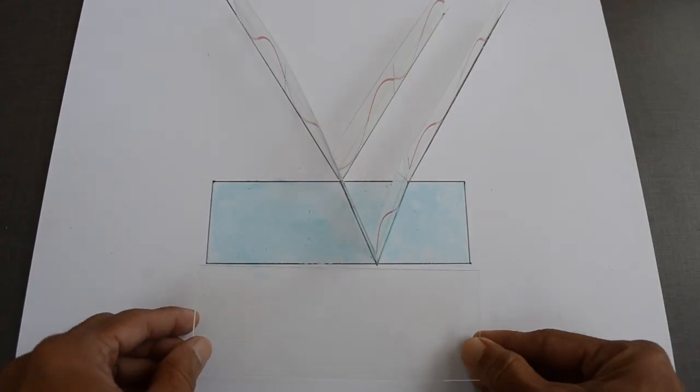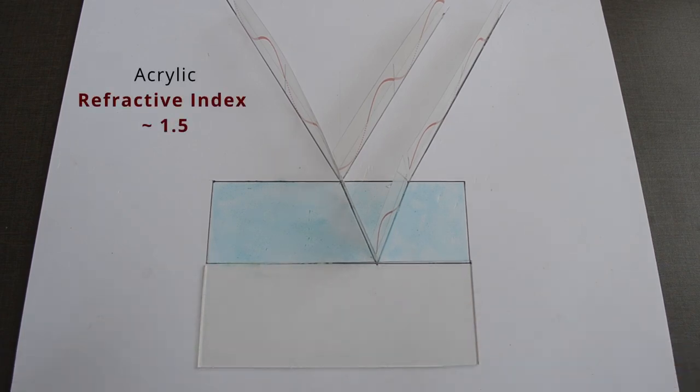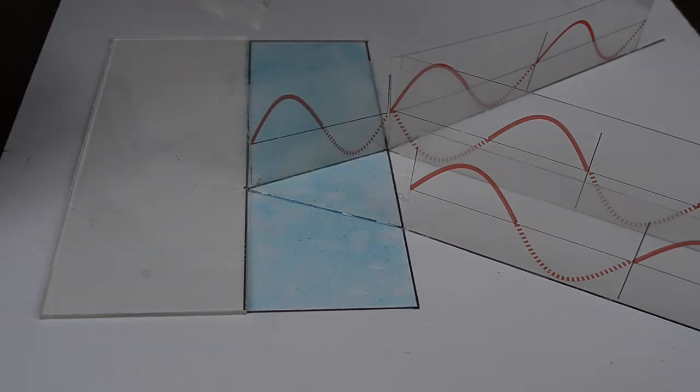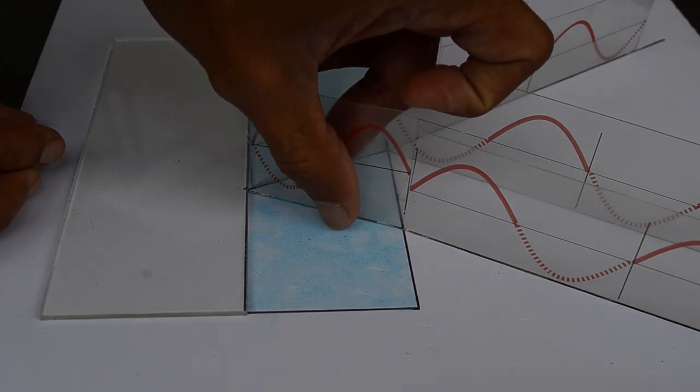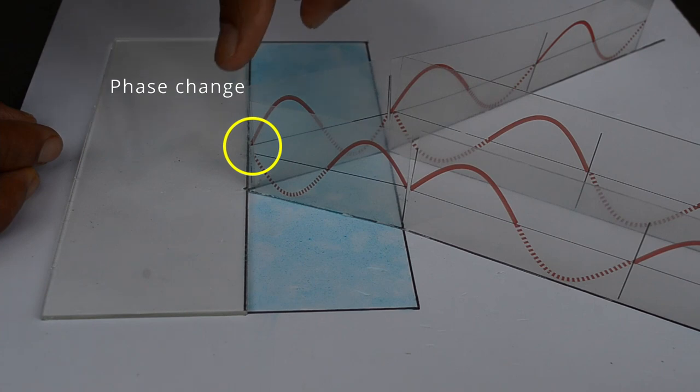Refractive index of acrylic is approximately 1.5, slightly denser than water. Will this change affect the phase difference of these two reflected waves? Yes. At this point, wave gets reflected from a denser medium. There will be 180 degree phase shift now. Wave coming out of the water film will be like this.